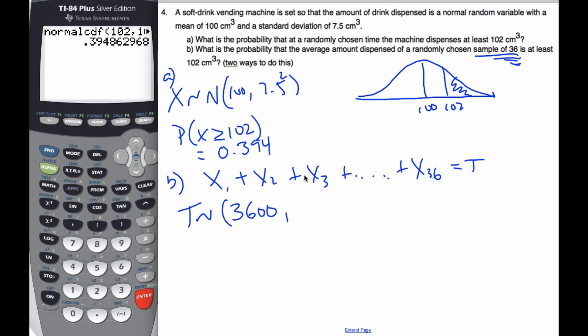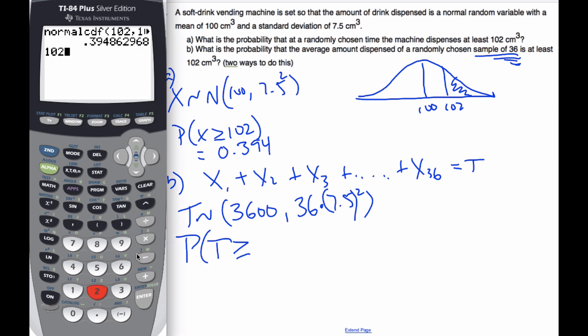The variance is going to be the variance plus the variance plus the variance, it's going to be 36 variances times 7.5 squared. And this is going to be T, the total. If the average is going to be 102, I'm going to look for the probability that T is bigger than or equal to 102 times 36, which is 3672.